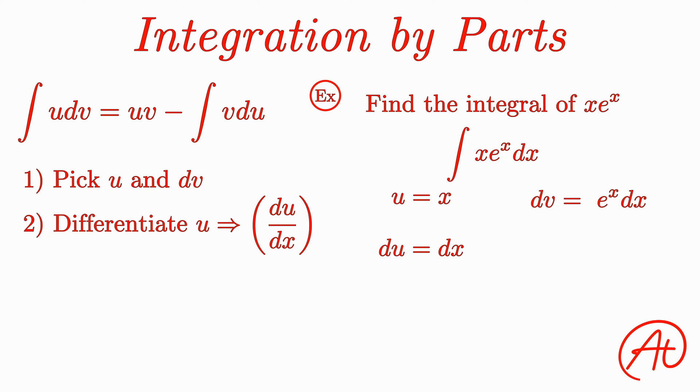Next, we need to find v, and we can do that by integrating what we picked for our dv. When dv is equal to e to the x dx, taking the integral of both sides gives us v equals e to the x. Great. Now we can plug all this stuff into our formula.